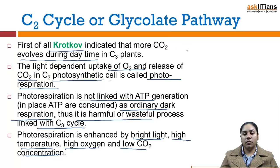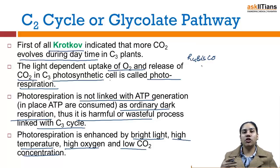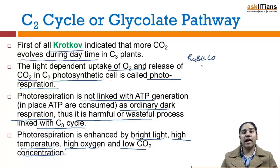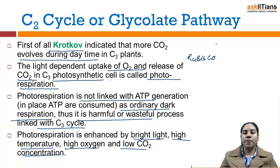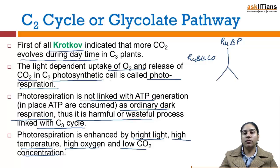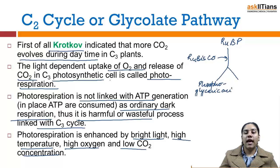There is one enzyme, rubisco. This rubisco enzyme does not only show carboxylase activity but it also shows oxygenase activity. It means it cannot only react with carbon dioxide — it also reacts with oxygen when there is high concentration of oxygen in the cells. So, rubisco in high concentration of oxygen converts RuBP (ribulose 1,5-bisphosphate) into one molecule of phosphoglyceric acid and one molecule of phosphoglycolic acid.